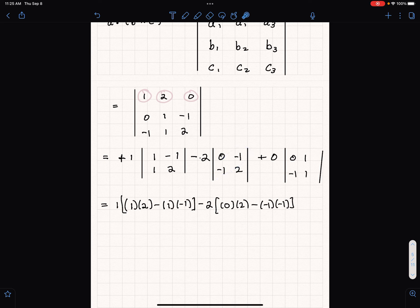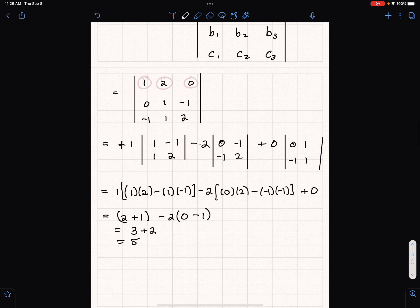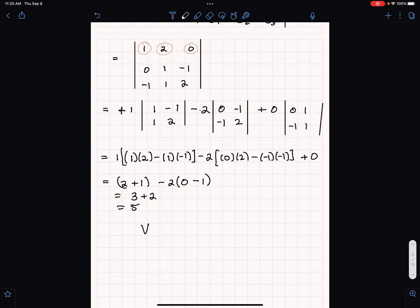This is two plus one, so that seems to give three plus two and that's five. So the volume is five, the volume of the parallelepiped.